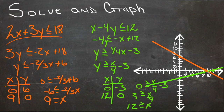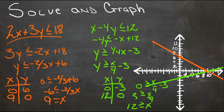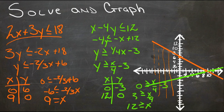For the first inequality, y ≤ -2/3x + 6, y can be anything on or below the line. So the orange line becomes an orange shaded region going below it at every point.